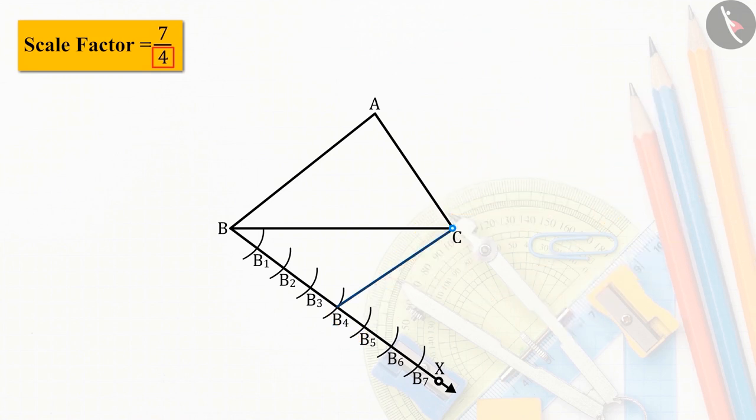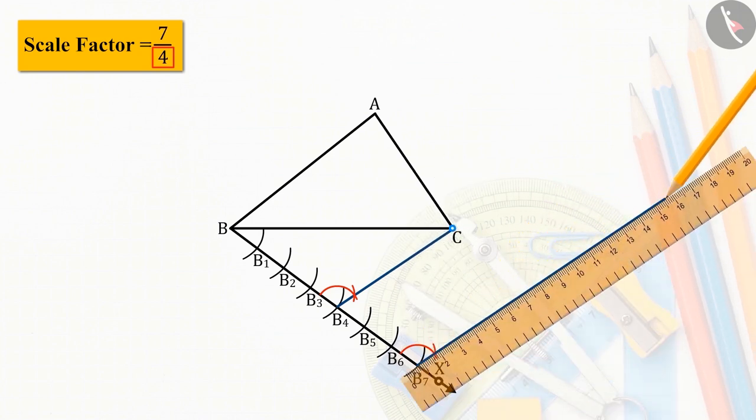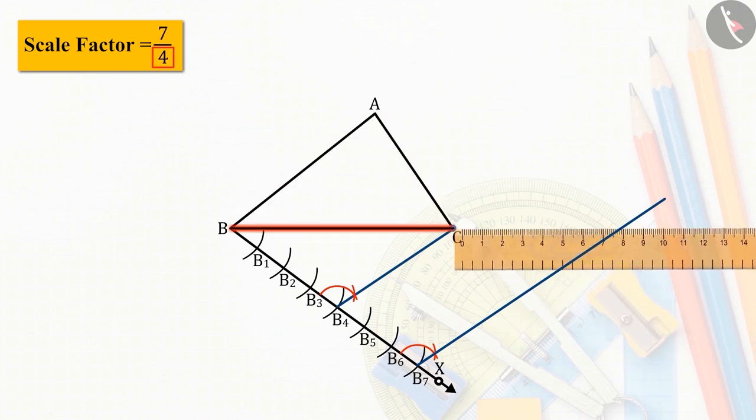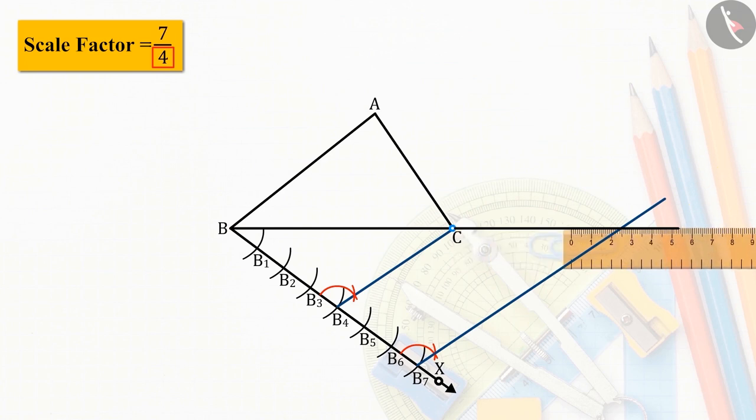From point B7, draw to the line CB4, a parallel line. And triangle ABC's side BC is extended. The line drawn from point B7 is intersected at point D.